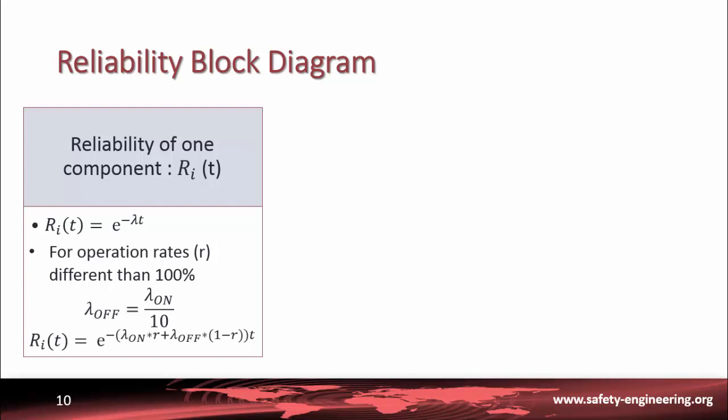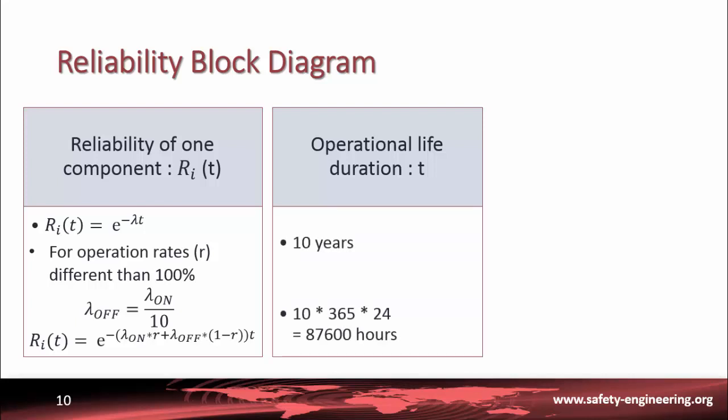We know that our operational life duration, T, is 10 years. But we have to express this time in hours like all the failure rates. So, T would be 87,600 hours.